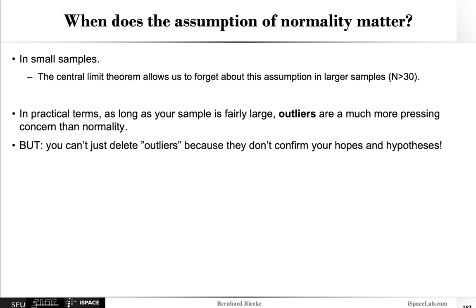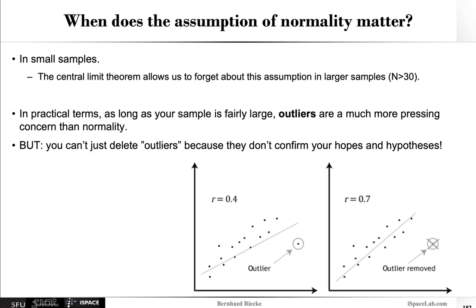So basically in practical terms as long as your sample is fairly large outliers are much more pressing concern than normality. But as just mentioned you can't just delete the outliers because they don't fit your hypothesis. If you do something about outliers you really have to have a systematic and reliable method for removing outliers that you actually state in your analysis in your paper that is reproducible. So here's just another example basically. For a simple correlation, if you just have one data point that is a bit outside it really changes the correlation quite a bit especially if you don't have huge amounts of data.